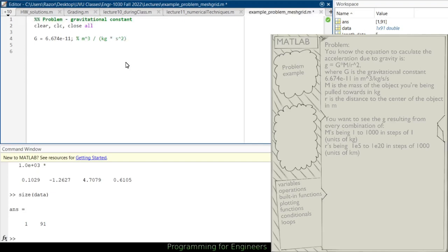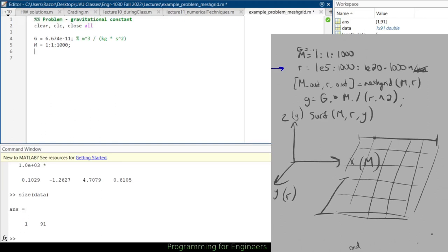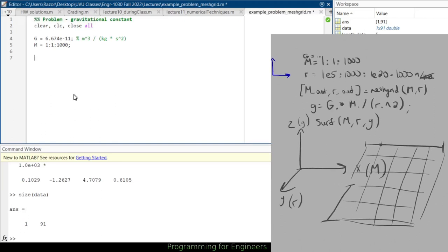Now I've got my m is 1 to 1000, like we found. And let's show this, okay, so this m is kilograms. Then I've got my r is 1e5 to 1e20.